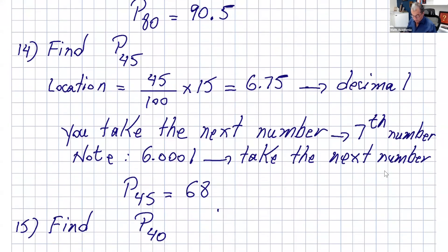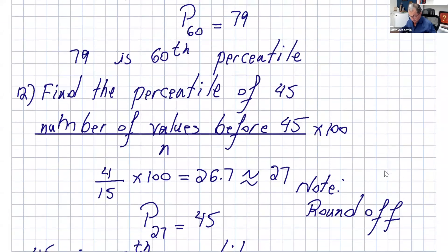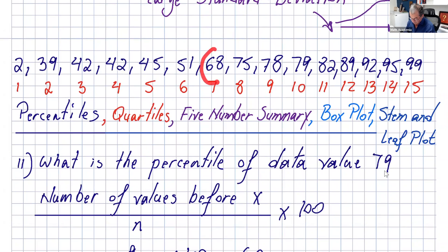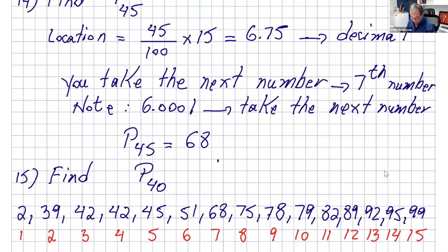Let's do another example: find the 45th percentile, or p45. The location of that number is going to be 45 divided by 100 times 15, which is the sample size. Here it's a little bit different because we got 6.75, and that's a decimal. It's very different when you find a decimal — if it's a decimal, you take the next number. So if I got 6.75, I go to my data and pick the seventh number. It doesn't matter — even if it's 6.0001, don't take the sixth number. You take the next number, which is the seventh number. The seventh number here is 68. Then you write p45 equals 68.